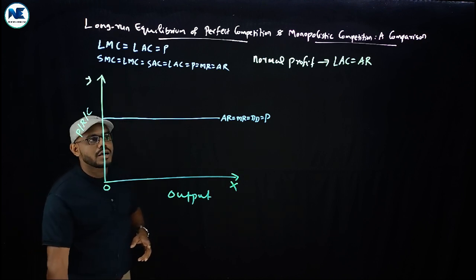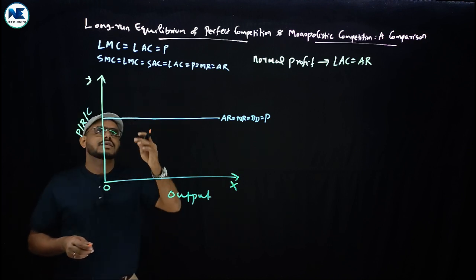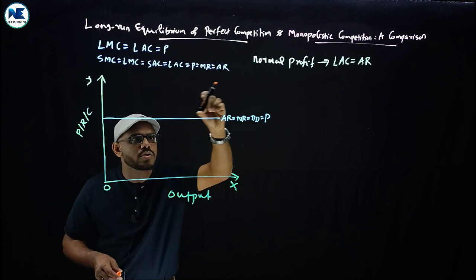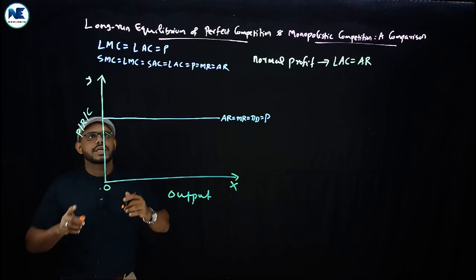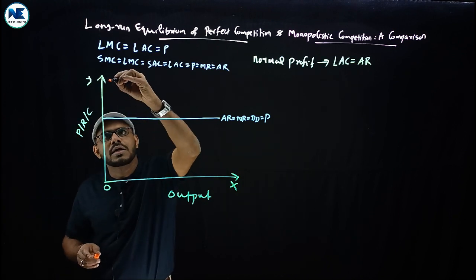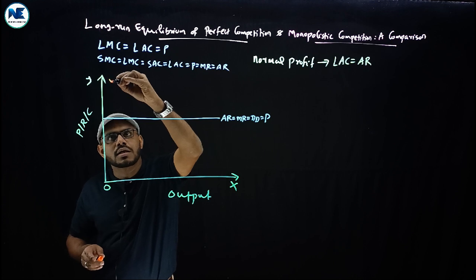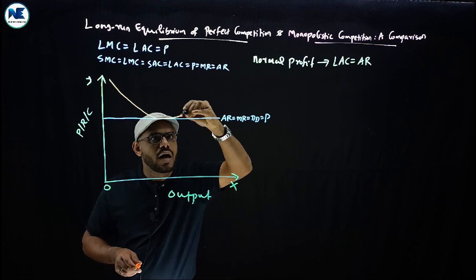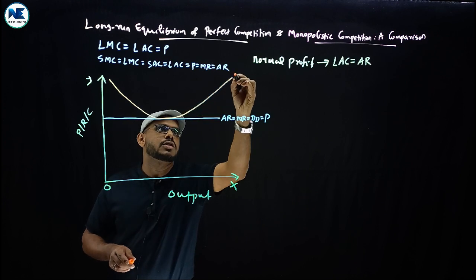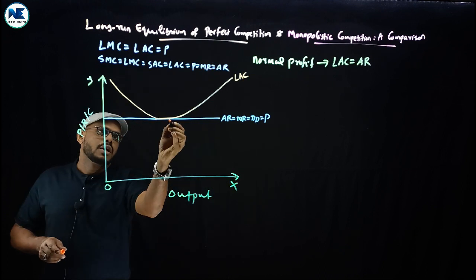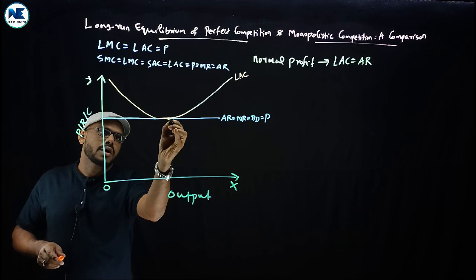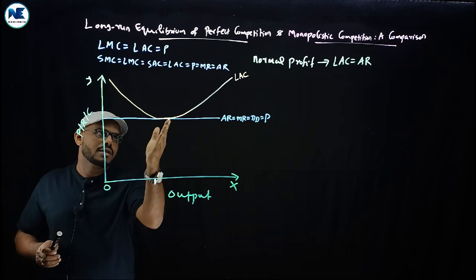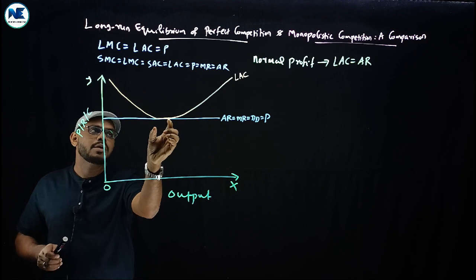We represent this through a simple diagram. On the Y-axis we have price, revenue, and cost; on the horizontal axis we have output. The demand curve under perfect competition is a horizontal straight line — average revenue equals marginal revenue equals demand equals price. The long-run average cost must be tangent to the average revenue curve. The long-run average cost is U-shaped and tangent to the average revenue curve. The long-run marginal cost passes through the minimum point of the long-run average cost.